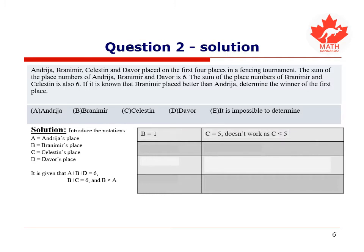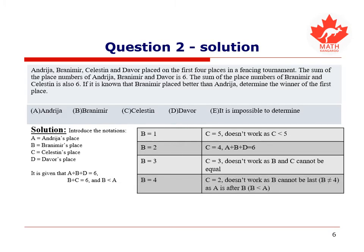So, when b equals one, then c would equal five, which does not work, as c must be less than five. When b equals two, then c equals four, which does work for a plus b plus d equals six. When b equals three, then c would also equal three, which does not work, as b and c cannot be equal. And when b equals four, then c would equal two, which does not work, as b cannot be last, as a is after b.